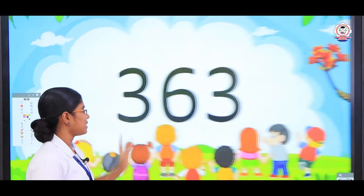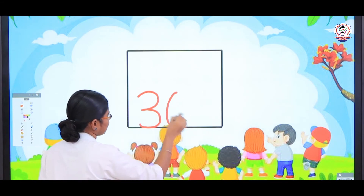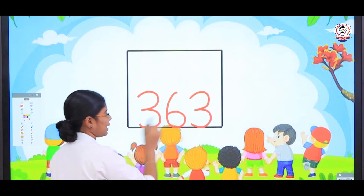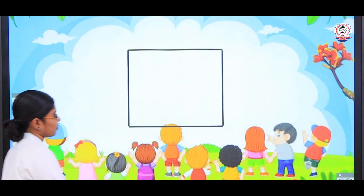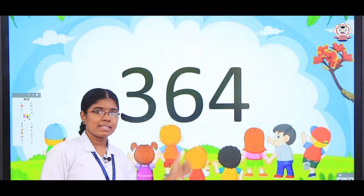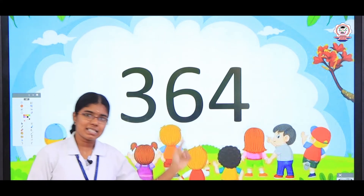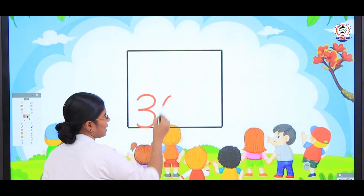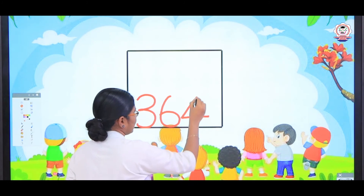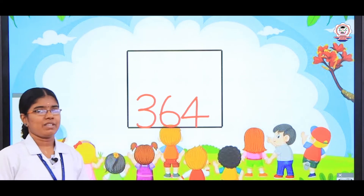363. Let's write — what is this? Try to write this number dears. Yes, 3, 6, 4 — 364. Shall we write this number dears? Yes, 3, 6, 4 — 364. 3, 6, 4 — 364.